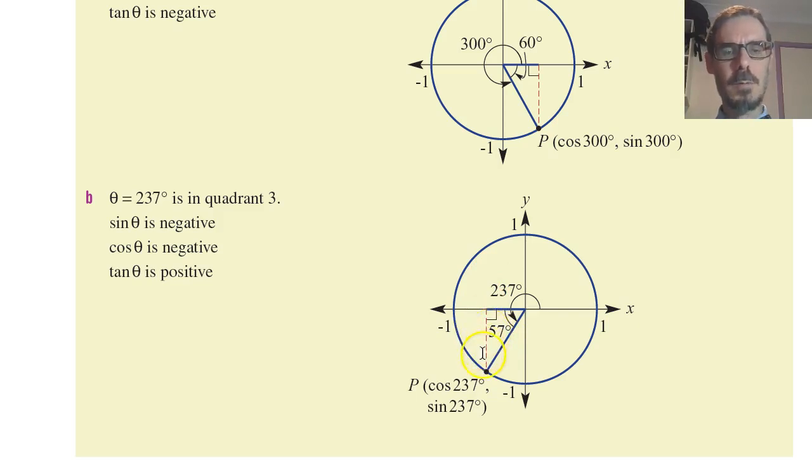In this quadrant, both x and y, so both cosine and sine, are negative. So tan is the only one that's going to be positive.